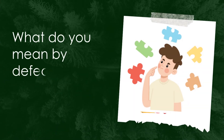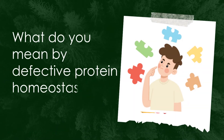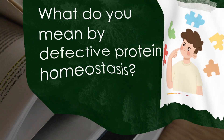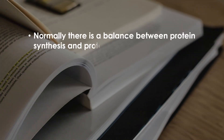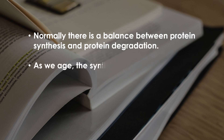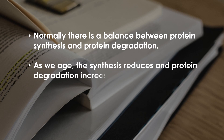What do you mean by defective protein homeostasis? Normally there is a balance between protein synthesis and protein degradation. As we age, the synthesis reduces and the protein degradation increases.